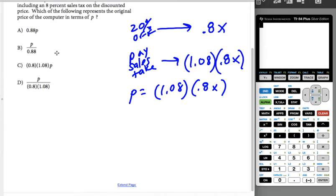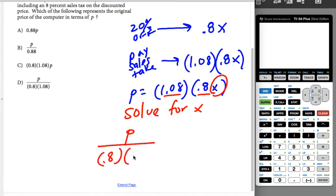But that's not what they asked you. They asked you to solve for the original price. So what we're going to have to do is take this and solve for X. Well, if I'm solving for X, this is all multiplication, so it's going to be P divided by the 0.8 times the 1.08. That should give me my original price X, so my answer should be D.